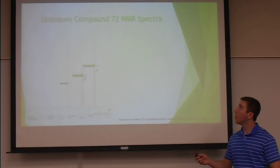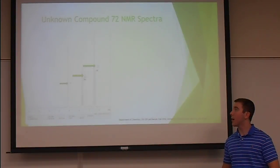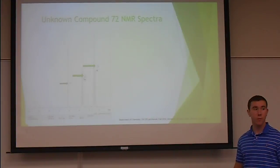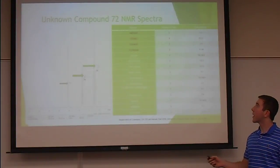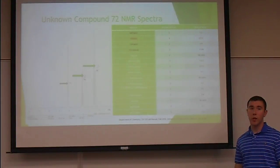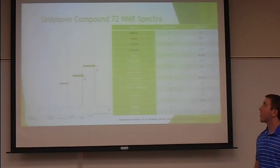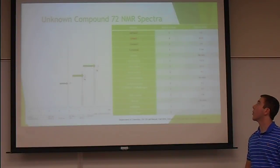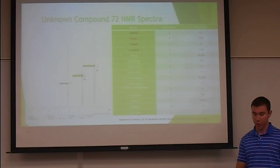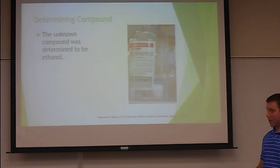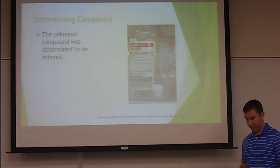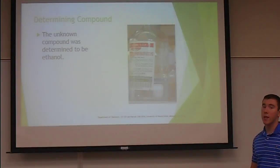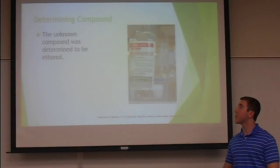Here's our spectra for the NMR of the unknown compound. We can see there are three peaks with a 1 to 2 to 3 ratio. By comparing it to the known compounds — methanol, ethanol, tbutanol, and 2-propanol — we can see that ethanol is the only one with a 1 to 2 to 3 ratio. We used an elimination process, using both NMR and IR, to determine the compound to be ethanol.